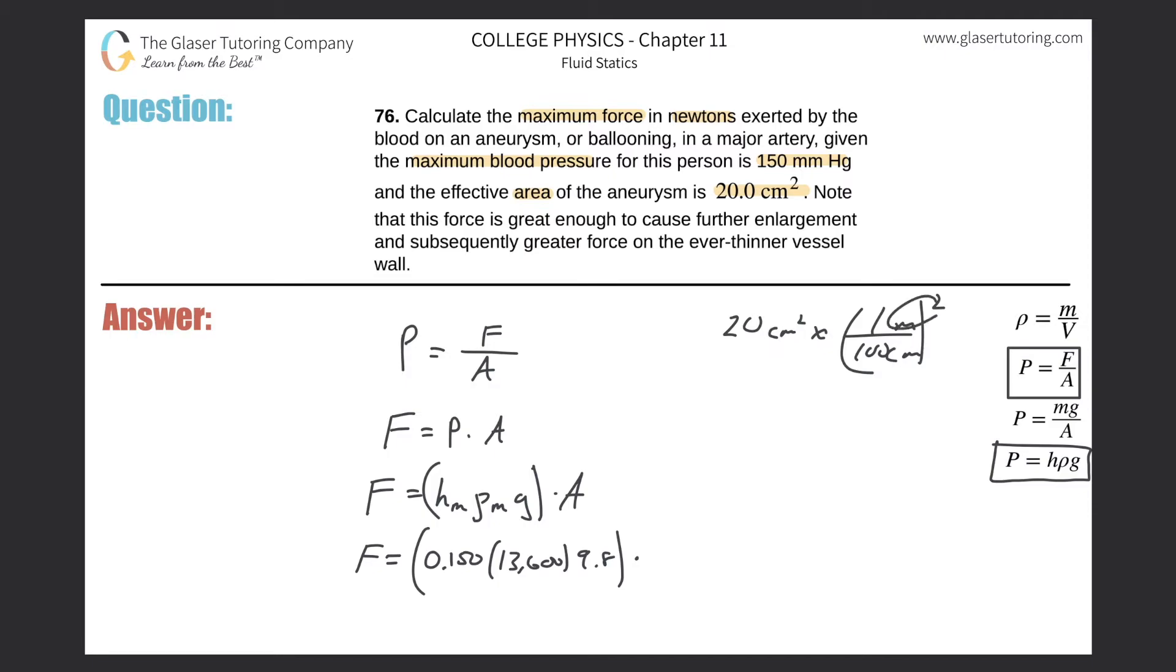So essentially now just plugging in this conversion, it's going to be 20 divided by 100 squared. I can also multiply the top by one squared because this is really one squared, but obviously we know that won't change anything.